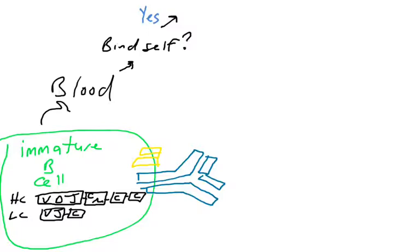As immature B-cells enter the peripheral circulation, it is still possible that these B-cells will interact with self-molecules. If they do, they don't have a chance to do receptor editing because the recombination enzymes are turned off at this point. If this immature B-cell with its B-cell receptor recognizes self in the periphery, then it can undergo two possible fates.